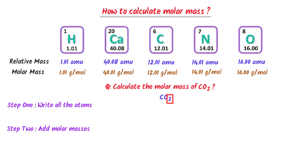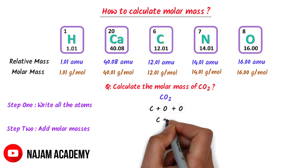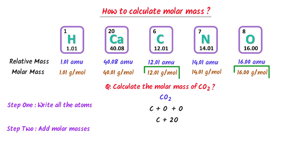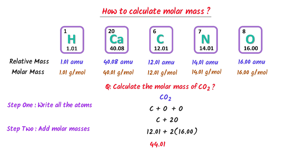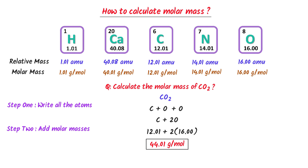The subscript 2 means that there are two atoms of oxygen. So I write carbon plus oxygen plus oxygen, or carbon plus two times oxygen. The molar mass of carbon is 12.01 and that of oxygen is 16.00. I write 12.01 plus 2 times 16.00. After calculation, I get 44.01. And lastly, I put the unit of molar mass which is gram per mole. So the molar mass of carbon dioxide gas is 44.01 gram per mole.